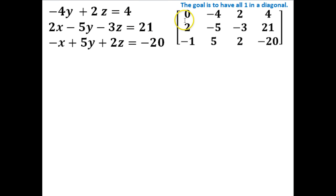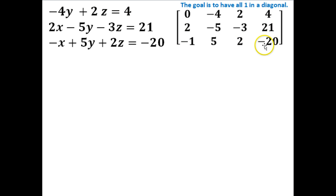The matrix looks like this. The 0 here came from the coefficient of x — it's 0 x's. Negative 4 came from y, 2 came from z, and 4 came from the right-hand side of the equal sign. Notice how you do put the right-hand side of the equal sign into that matrix. Negative 1 comes from x, 5 comes from y, 2 comes from z, and negative 20 comes from the right side of the equal sign.